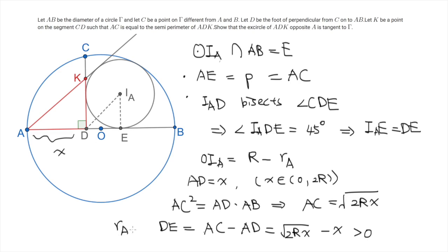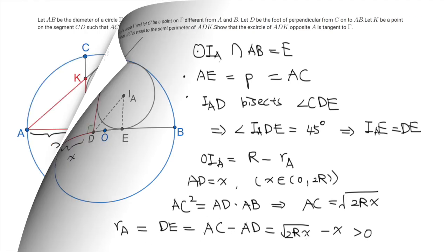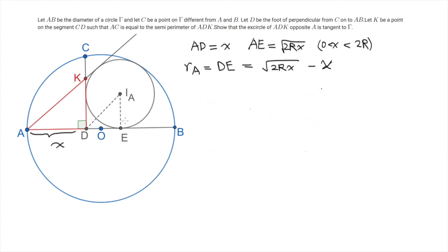And since IAE equals DE, this is nothing but RA. Then now it remains to evaluate the distance between O and IA. And this is not that hard because OIA squared equals IAE squared plus OE squared. And we know that IAE is RA. So this is RA squared plus OE squared.